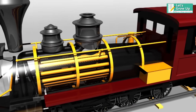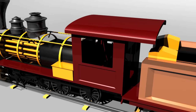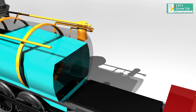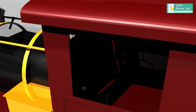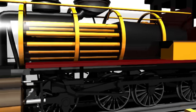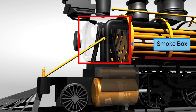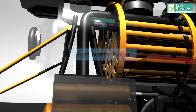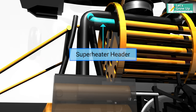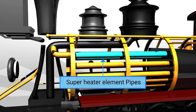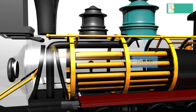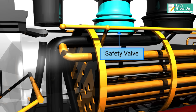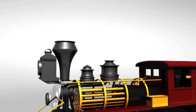Let's learn the different parts of the steam locomotive boiler engine. These are: Firehole, Firebox, Smokebox, Blastpipe, Superheater Header, Superheater Element Pipes, Dome, Regulator Valve, Safety Valve, and Chimney.